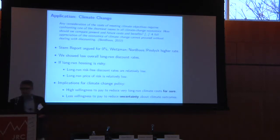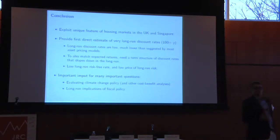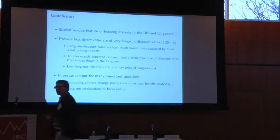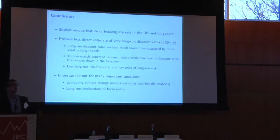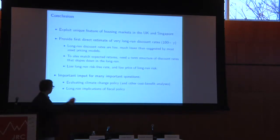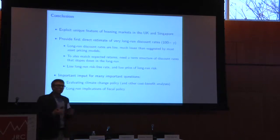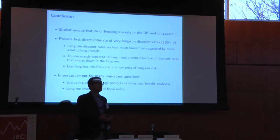To summarize: we exploit a unique feature of housing markets in the UK and Singapore to bring the first direct estimates of very long-run discount rates. We find them to be very low — much lower than suggested by most asset pricing models, so this is not something you could have gotten from theoretical prediction alone. In fact, theory would have guided you the wrong way. To match expected returns, the term structure of discount rates needs to be downward-sloping. This implies low long-run risk-free rates and a low price of long-run risk — important inputs for climate change policy and other intergenerational discounting questions.